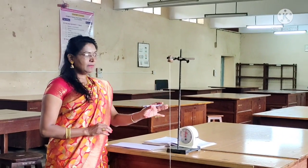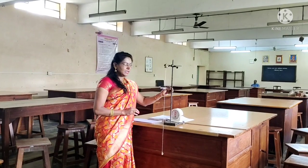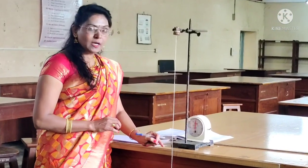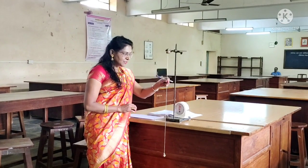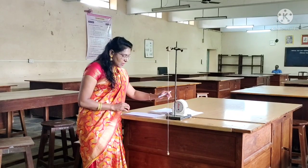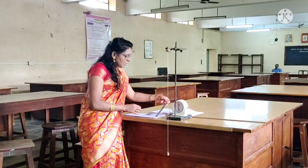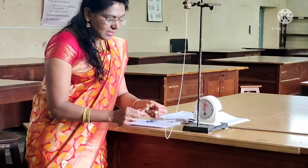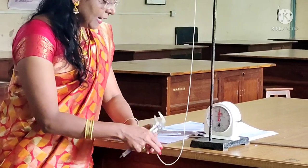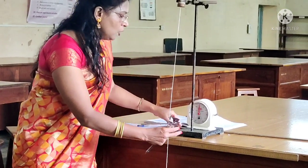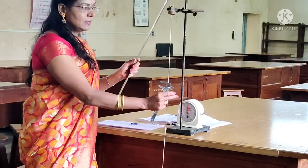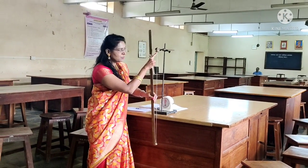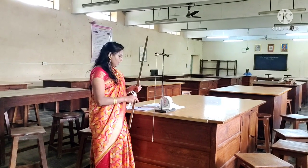In this activity, apparatus used: here is a stand where the rigid support is provided to this metallic bob with the help of this thread. Next stopwatch is used, and here the vernier caliper is used to determine the radius of this spherical ball. In order to measure the length of this spherical ball from this rigid support, here meter scale is used.